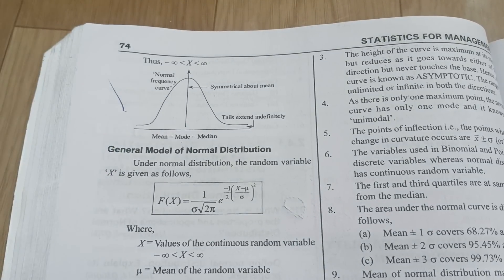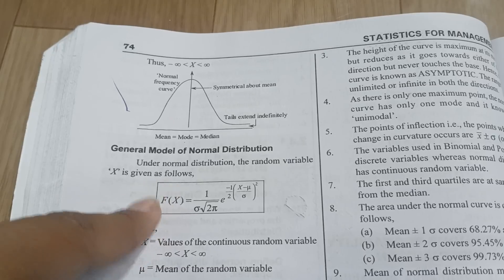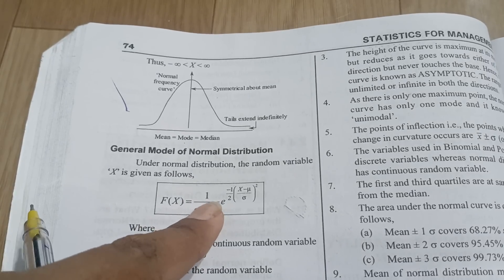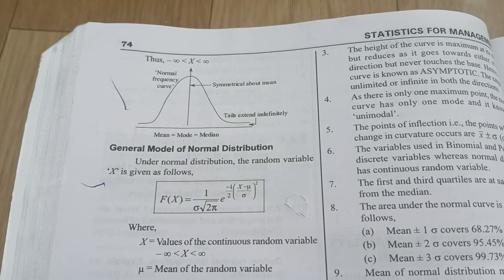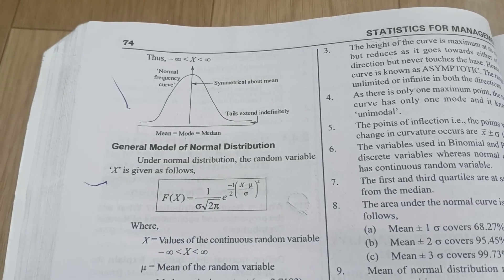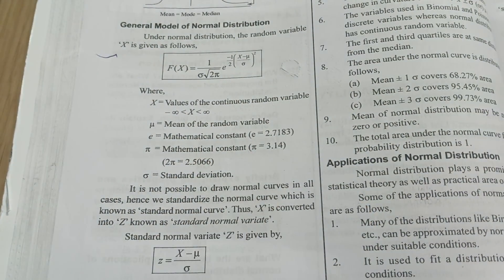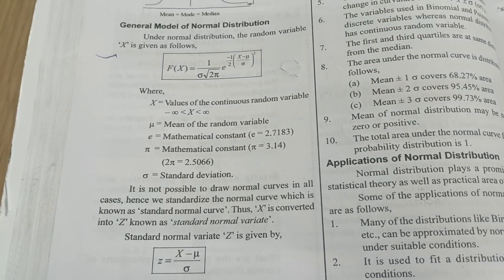Normal distribution formula is f of x equals 1 by standard deviation under root 2 pi e. This is the formula you need to remember. You need to remember as it is, you need to by heart it, and you need to elaborate the answers. X stands for continuous random variable, this is mean, this is variance, this is mathematical constant. Like that you need to mention it.